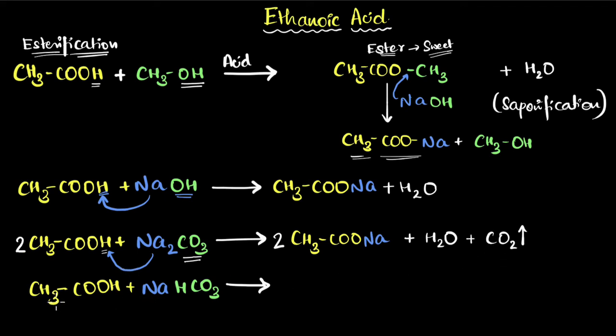We can now go to the last reaction. What happens when you have ethanoic acid reacting with sodium bicarbonate? Again, very similar story. Pause and try. Na is going to kick this hydrogen out, so you get CH3-COO-Na.